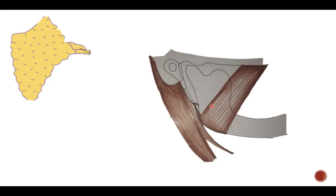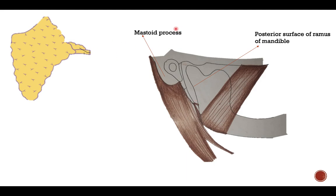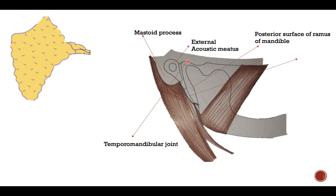Let us see the structures which line the retromandibular fossa. Anteriorly, it is lined by the posterior surface of the ramus of mandible. Posteriorly, it is lined by the mastoid process. Superiorly, it is lined by the external acoustic meatus and the temporomandibular joint — the joint between the mandible and the temporal bone. Medially, it is lined by the styloid process.